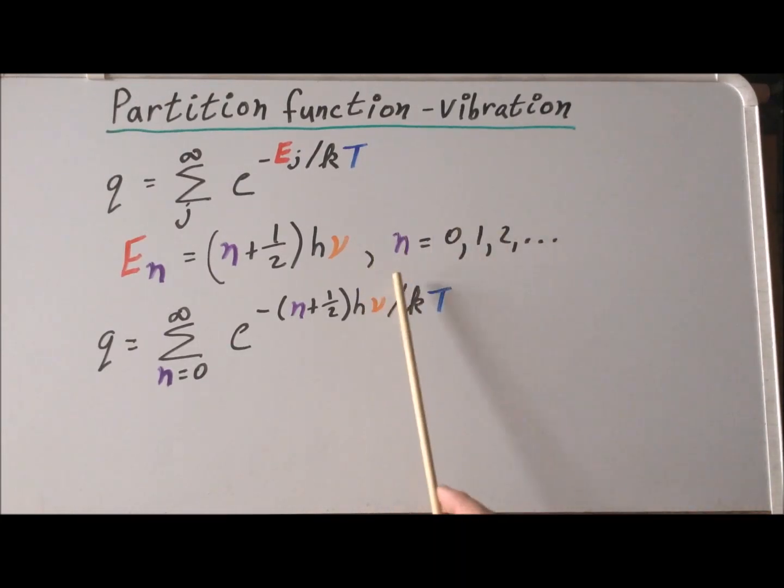We're going to neglect to write the n equals zero, one, two, three, because that is taken up by the summation symbol.